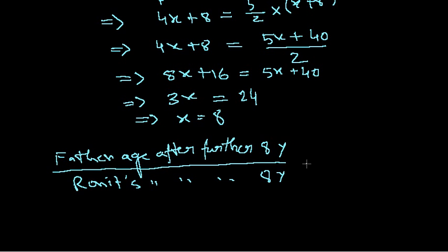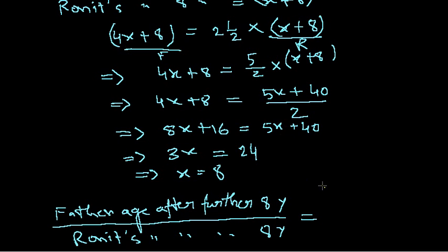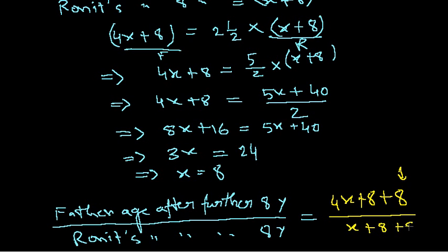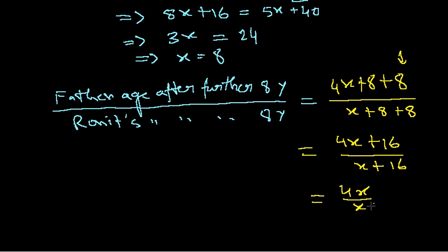After the first eight years, the father's age was 4x + 8. A further eight years are added, so the father's age becomes 4x + 16. Similarly, Ronit's age after the first eight years was x + 8, and with a further eight years added it becomes x + 16. We now compute the ratio (4x + 16) / (x + 16).